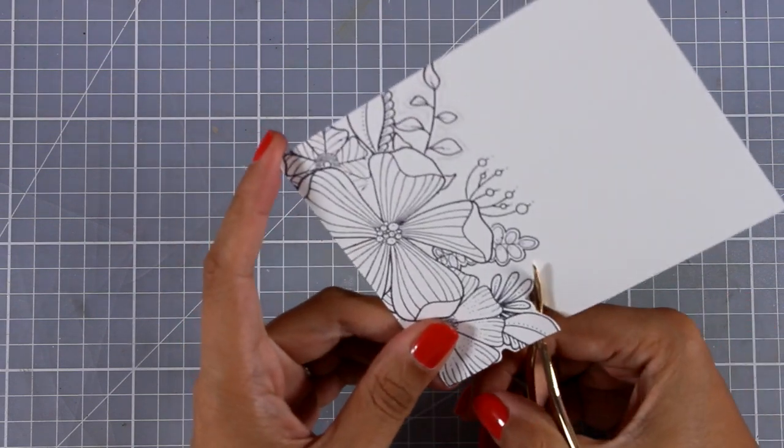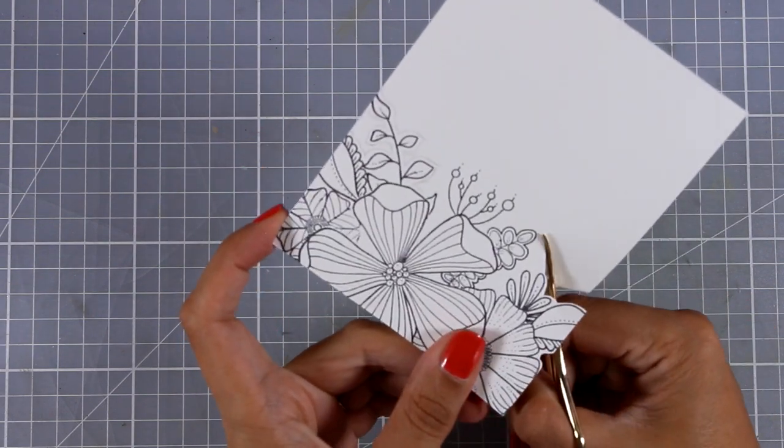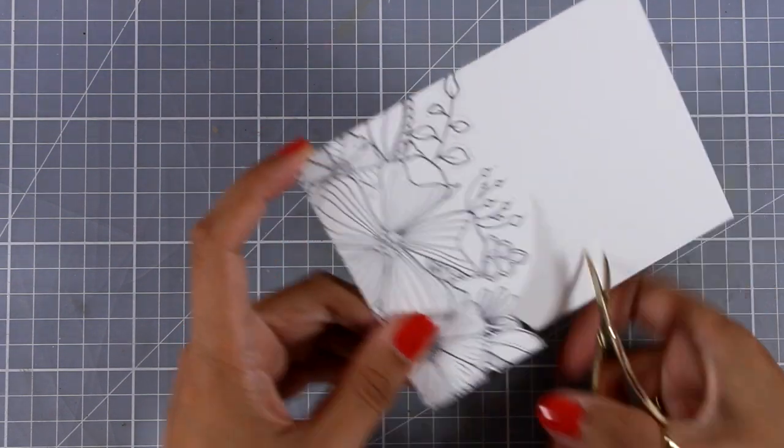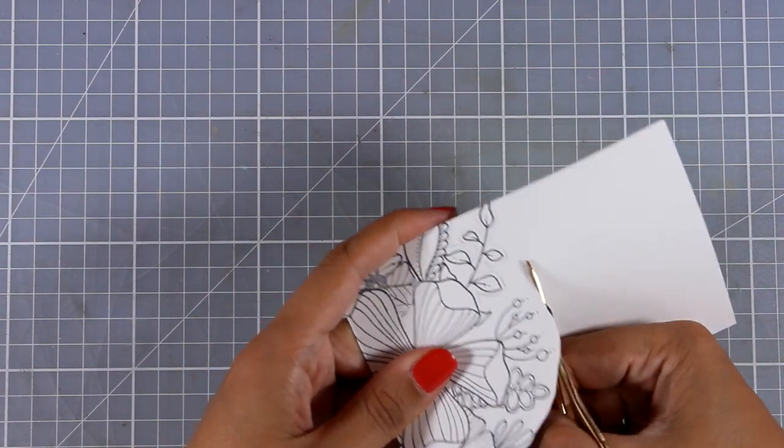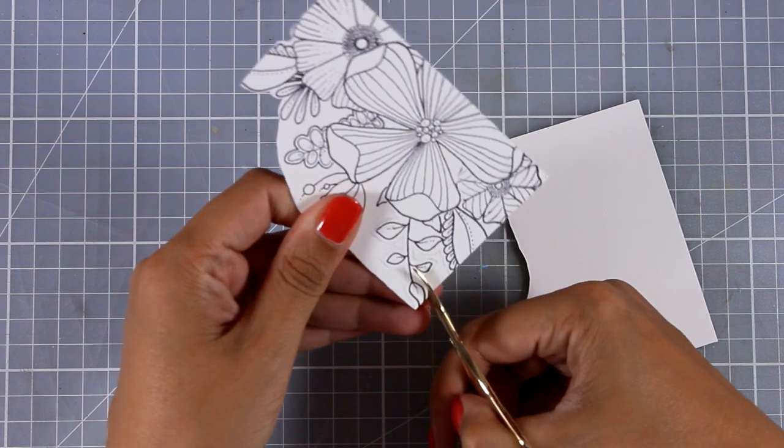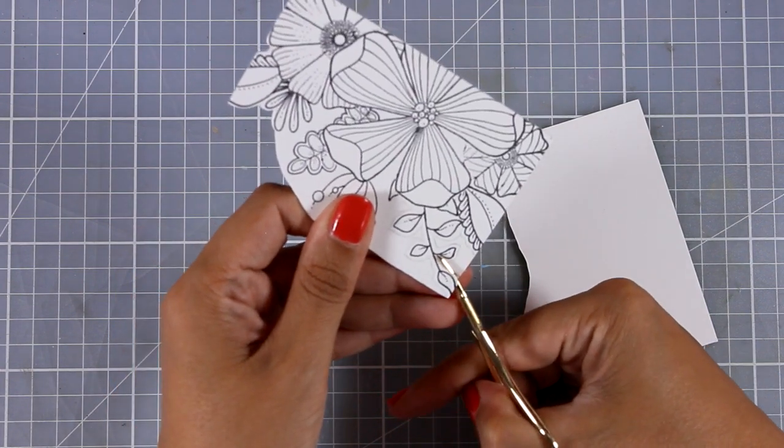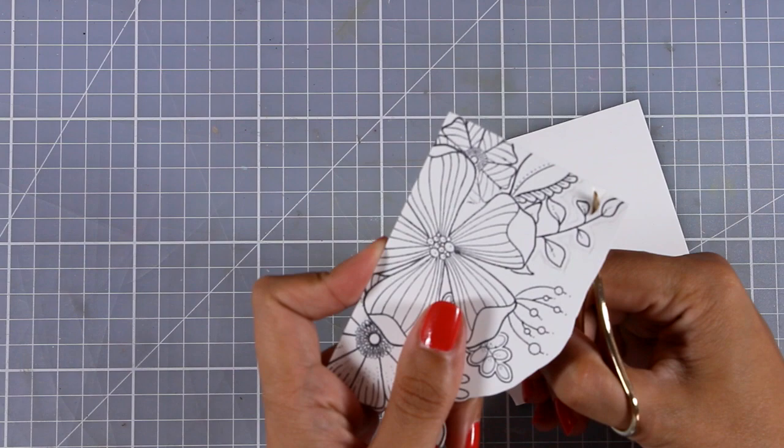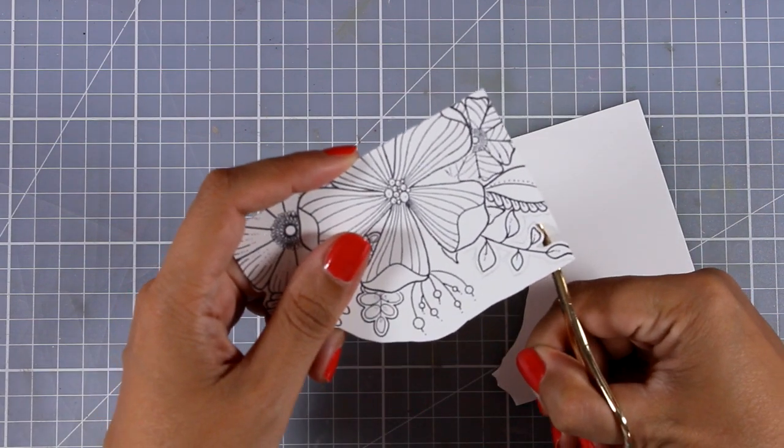Now as always, you will find links down below in the description area to everything I'm using, including the scissors as well as the stamp sets. Of course, this is not a quick and easy card—it's not something you can easily recreate or mass produce—but it's definitely a special card and it's going to look gorgeous at the end.